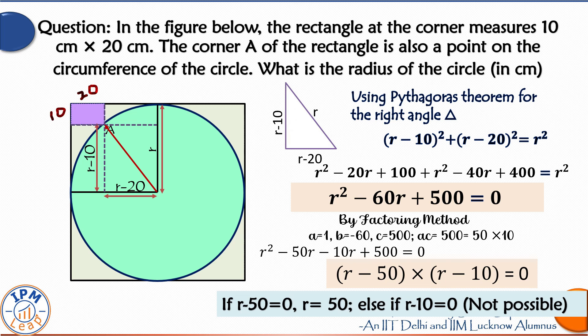Therefore, our answer is R is equal to 50 centimeter. The radius of the circle inscribed inside the square is 50 centimeter.